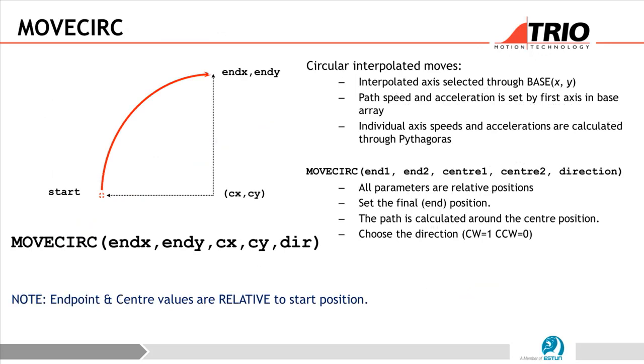Another command will be MOVECIRC - circular interpolated move. The interpolated axis selected through the BASE x and y, path speed and acceleration is set by the first axis, same as the MOVE command. But for MOVECIRC you have to define your end1 and end2 and your center and the direction. All parameters are relative position. The path is calculated around the center position. Your direction - if you are clockwise is 1 and counterclockwise is 0, relative to your start position.